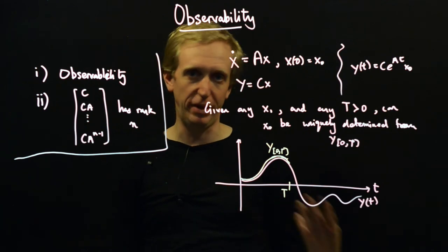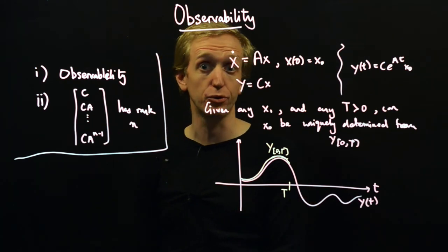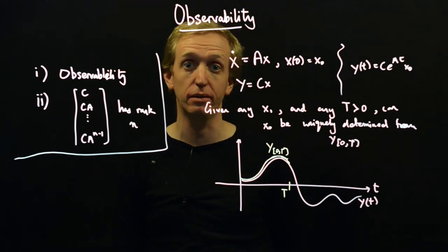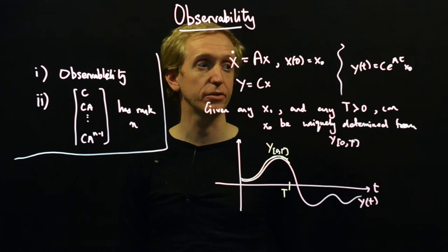And also they do proof showing that one implies two and two implies one. And also something involving the observability Gramian. Lots of the idea is all based on this Cayley-Hamilton rewriting idea, just like in the controllability case. So we're not going to go through it again or go through these ideas again. You can go and find the details there if you're interested.